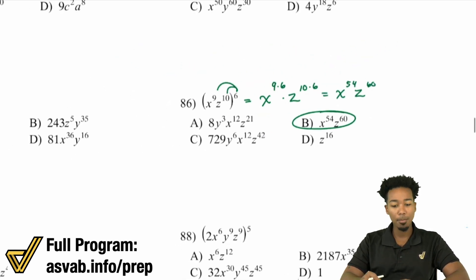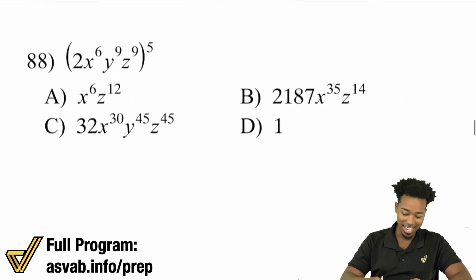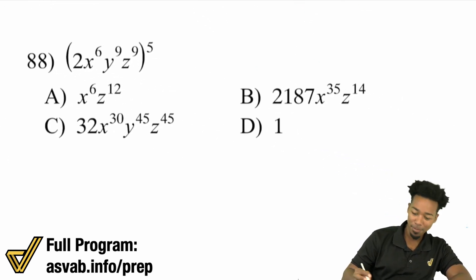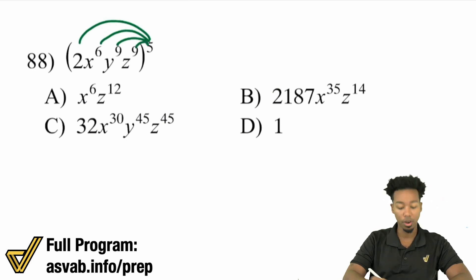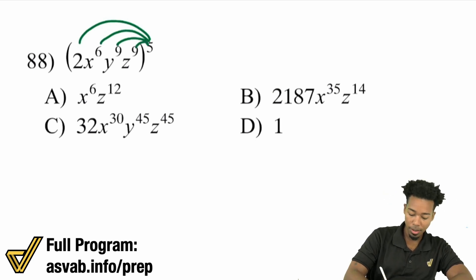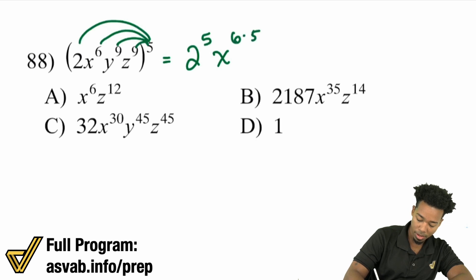It's when we start mixing the topics together that might make it feel complicated. Let's take care of number 88. We're going to distribute that exponent of 5 to all the other exponents. We have 2 to the power of 1, so that will be replaced with 2 to the power of 5. Then x to the power of 6 times 5, y to the power of 9 times 5, and z to the power of 9 times 5.